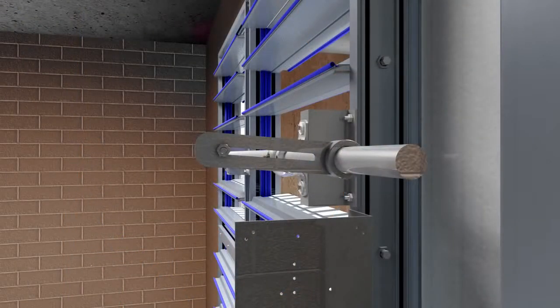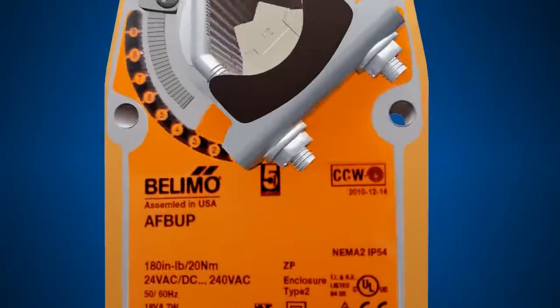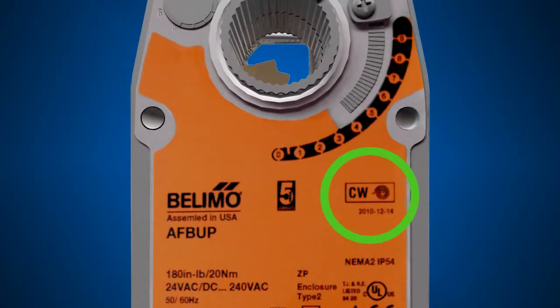Note that if the jackshaft were to rotate clockwise to close, you would need to move the universal clamp to the clockwise side of the actuator.